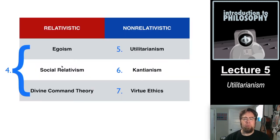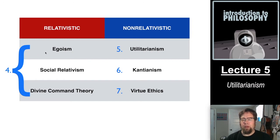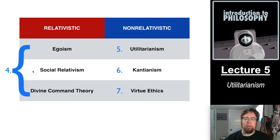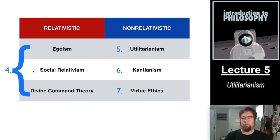In lecture four we were focusing largely on theories of ethics that I called relativistic theories of ethics. That included egoism, social relativism, and divine command theory. These all try to make the truth of ethical statements relative to the judgment of one or more individuals. In egoism, each individual themselves were able to make something true just by judging it to be true, at least when it came to ethics. Social relativism doesn't do it on an individual basis but groups people together into societies, and there's nothing right or wrong independently of the opinions of various groups or societies.